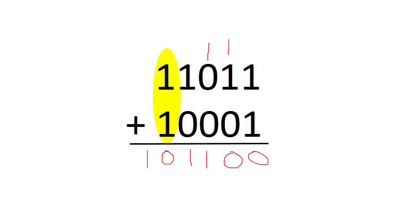So 1 1 0 1 1 plus 1 0 0 0 1 is equal to 1 0 1 1 0 0.